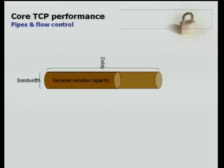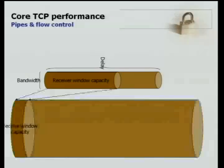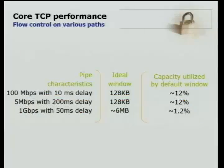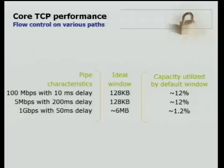So if you take this receive window and overlay it on a pipe that looks very different, you get very different throughput. If your receive window is fixed, you go from a network where the receive window is fine to a different network and your throughput tanks. This is a numerical way of looking at what I just showed pictorially — you can see what the ideal window would be for various paths with various speeds and round-trip delays, and also what capacity would be utilized by a default 64K window, which is the maximum you can use by default in TCP.